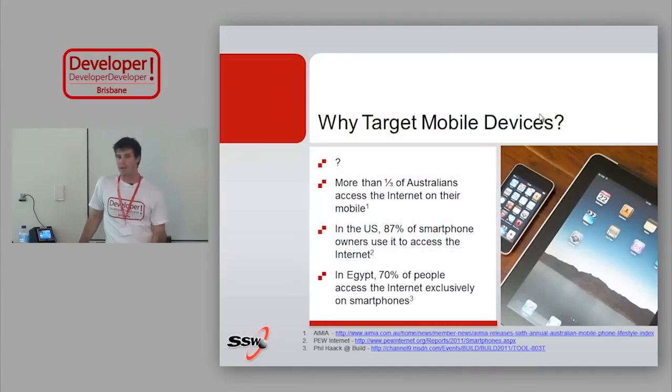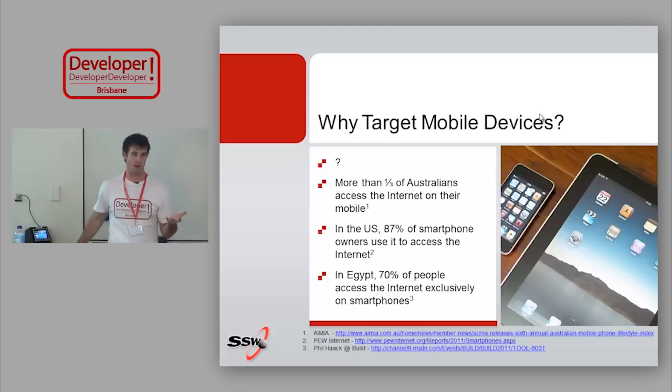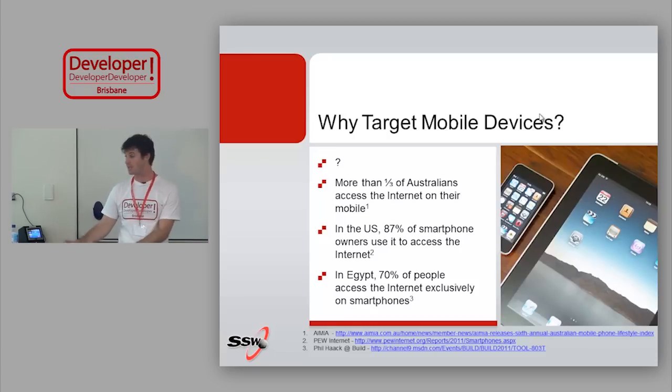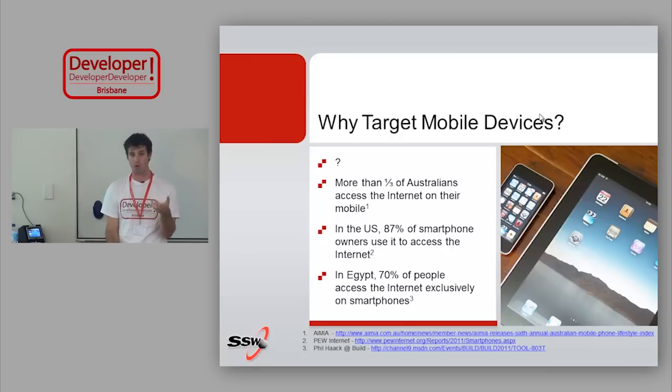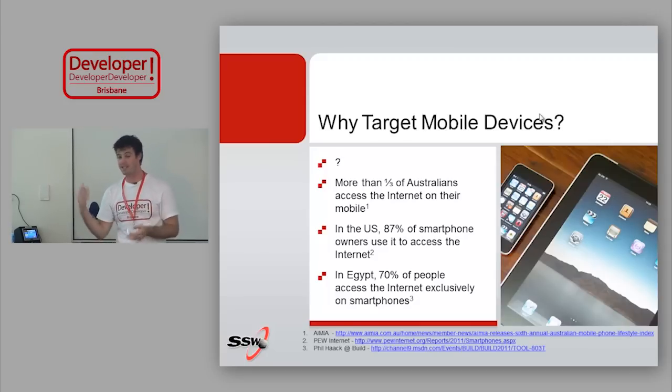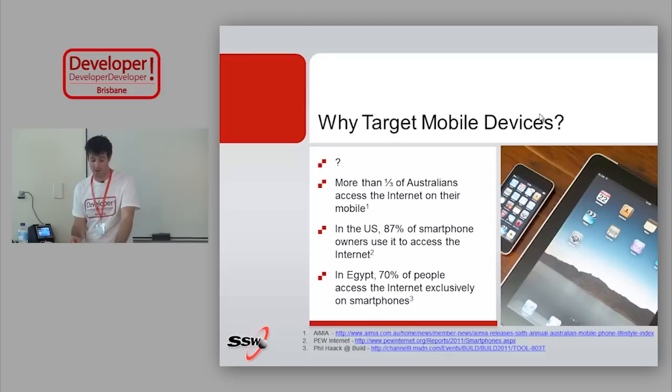These trends are really clearly going in one direction. In the US, about 65% of people say they've got a smartphone, and of those, 87% say they use it to access the internet. 68% say they do it on a typical day. 25% of people in the US use their mobile phone as their primary way of getting to the internet, not a PC. And in Egypt, up to 70% of people use their mobile phone as their only way of accessing the internet. These statistics should really push you in that direction.